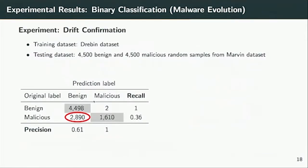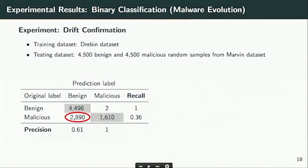For the first experiment, we fit a linear SVM with features statically extracted from the binaries — including APIs invoked by the binary, strings, and so on — from the Drebin dataset. For the testing dataset we split the original Marvin dataset in two roughly equal halves: about 4,500 benign and 4,500 malicious random samples, randomly sampled over the whole time frame 2010 to 2014. We feed this to the trained classifier, and as you can see, 2,890 samples were misclassified as benign — these are all false positives.